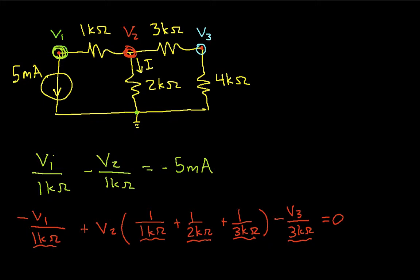Okay, let's look at node 3. For node 3, I'll have minus V2 over 3kΩ, plus V3 times 1 over 3kΩ plus 1 over 4kΩ, and this is equal to 0. Okay, again, the minus V2 over 3kΩ comes from the connection between node 3 and node 2 through the 3kΩ resistor. The V3, 1 over 3kΩ, it comes again from that connection, and 1 over 4kΩ comes from the connection between node 3 and the reference node through the 4kΩ resistor. And this is set equal to 0 because there's no current sources that enter or leave the node.